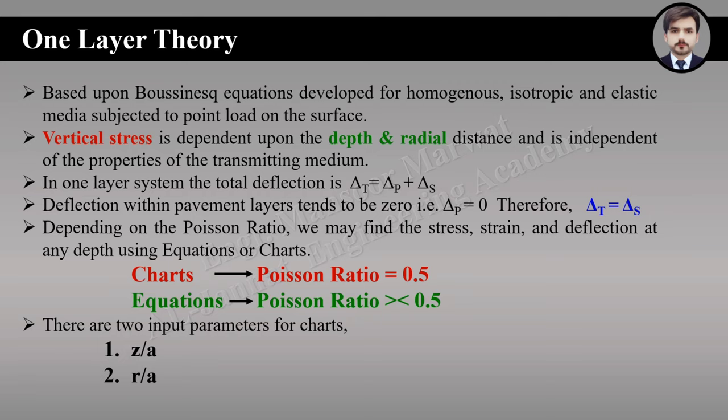There will be a focus on problem solving, but to solve those problems we just require a little bit of theoretical background. One layer theory considers the pavement as just a subgrade — compacted earth. One layer theory is based upon the Boussinesq equations developed for homogeneous, isotropic, elastic media subjected to a point load on the surface. Vertical stresses at any point depend upon the depth and radial distance, and are independent of the properties of the transmitting medium.